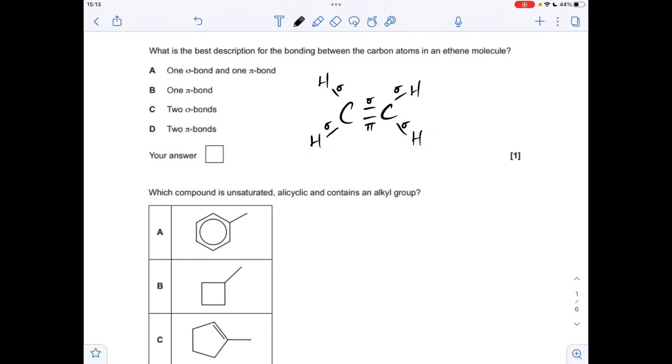Okay, so let me make a start. I've drawn up an ethene molecule and shown all the sigma and pi bonds. You can see in the carbon-carbon double bond we've got one sigma and one pi bond, so it was option A.